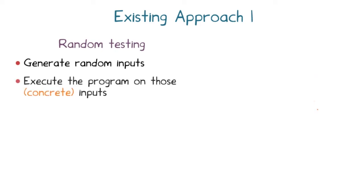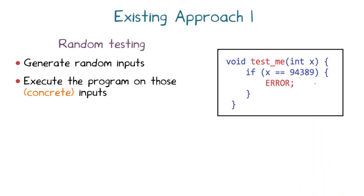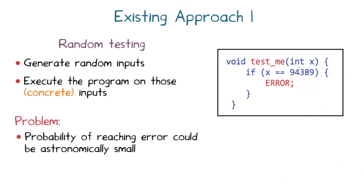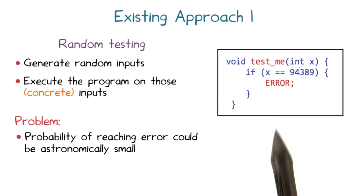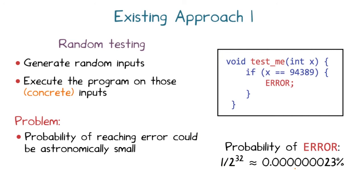To motivate the DSE approach, let's consider random testing, where we generate random inputs and execute the program. In the example program TestMe, if x equals 94389 the program raises an error, otherwise it exits normally. Assuming an int is 32 bits and each possible value has equal probability, the chance that a random input detects this error is astronomically small — 1 out of 2 to the power 32, about 23 billionths of a percent.